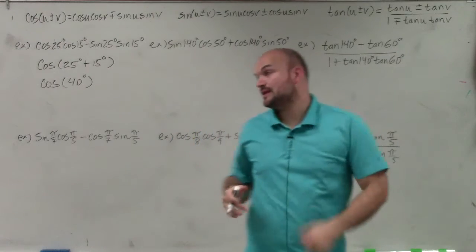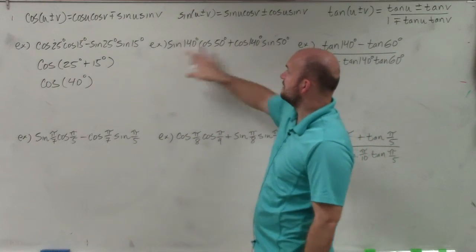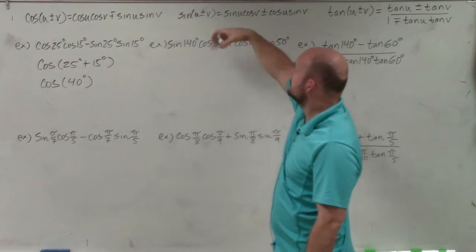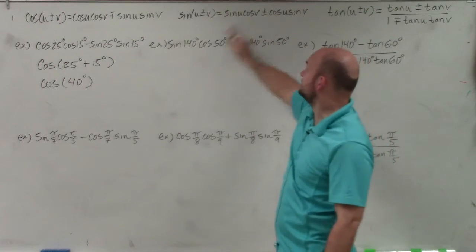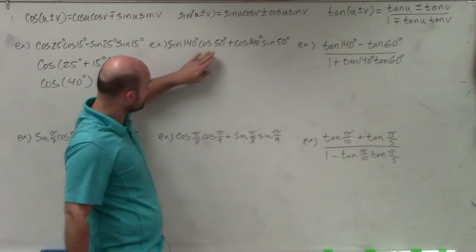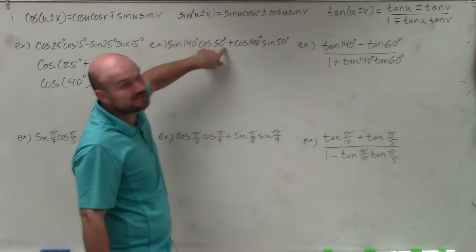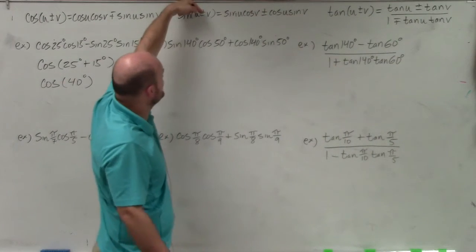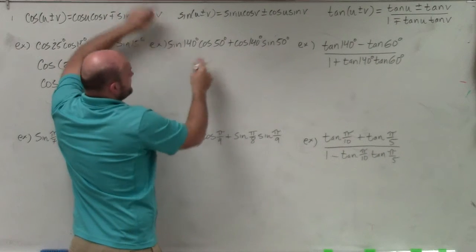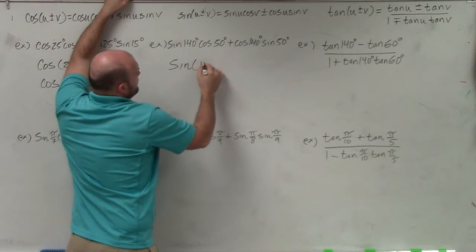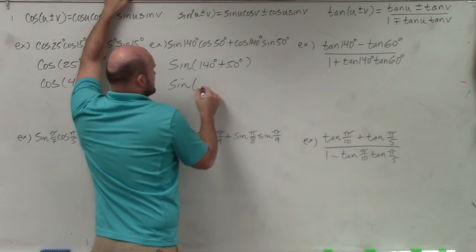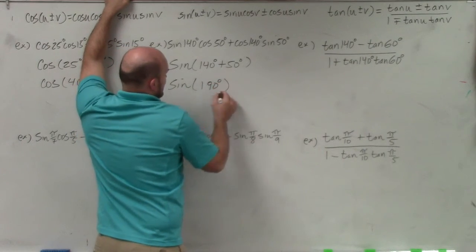Now let's look at the next one. We have an expression — it's not the sum and difference of cosine because we have sine and cosine. Looking right above, we have the sine formula, and you can see those correspond. We just need to confirm: are we adding or subtracting the angles? We have addition between our two expressions, which means we're adding the two angles. Our two angles are 140 and 50 degrees, so this is sine of 140 degrees plus 50 degrees, which equals the sine of 190 degrees.